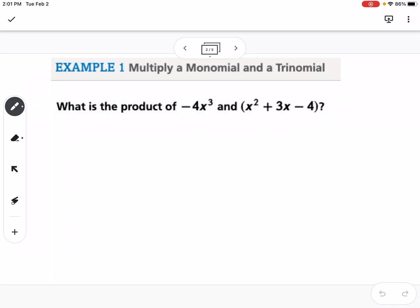The first example is multiplying a monomial and a trinomial. Remember, the prefix tells us how many terms. A monomial means there's one term, and a trinomial means there's three terms. So when you have one term times three terms, you're going to end up with three terms as well.